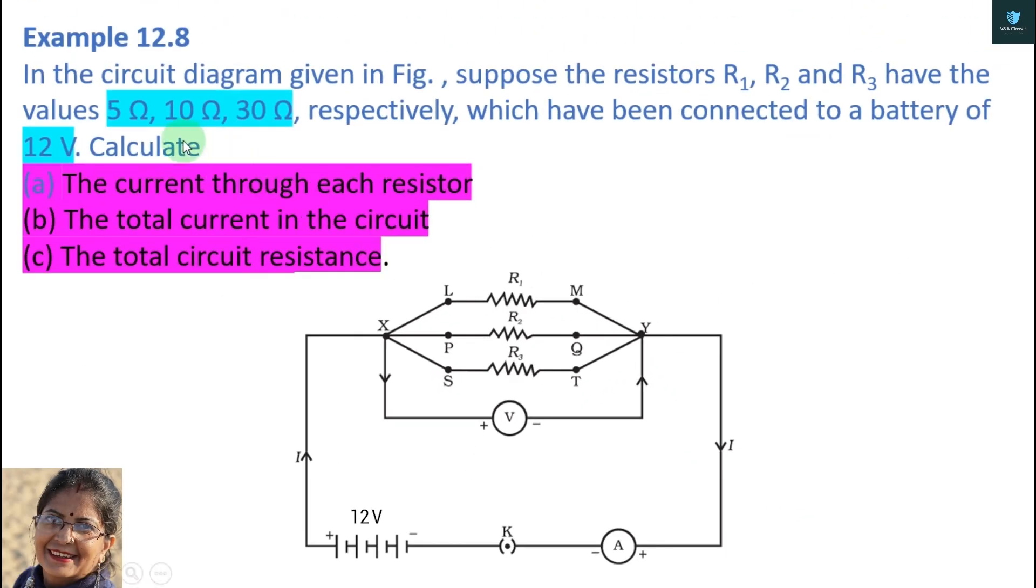Example 12.8. In the circuit diagram in this figure, suppose the resistors R1, R2 and R3 have the value of 5 ohm, 10 ohm and 30 ohm respectively, which have been connected to a battery of 12 volt. Calculate: